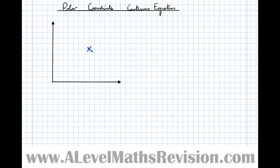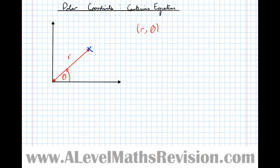In this video, we're going to have a look at how to find the Cartesian equation of a polar curve. Take any general point on a polar curve. We know that the distance from the origin to the point is called R, and the angle made with the initial line — the positive x-axis, which we call the initial line in polar curves — we're going to call theta. So this has polar coordinates R and theta.